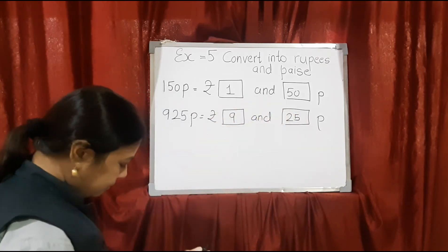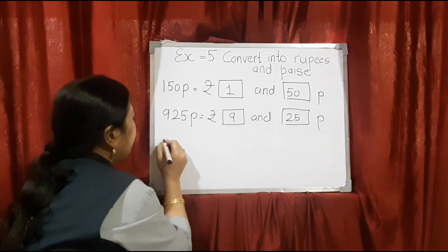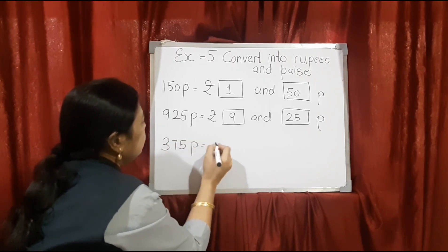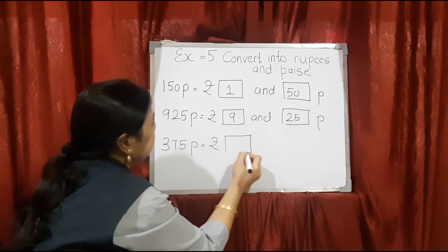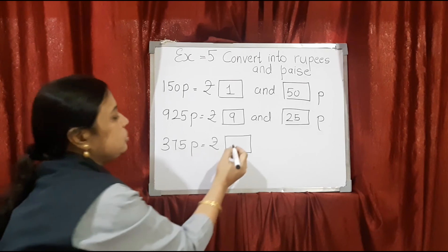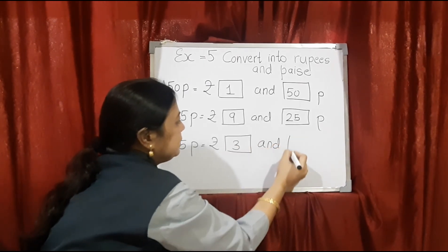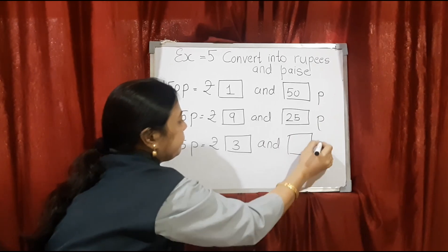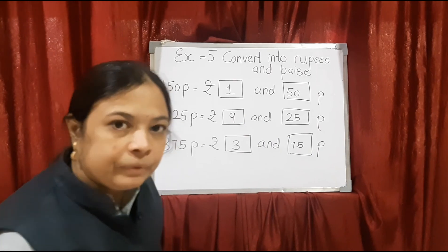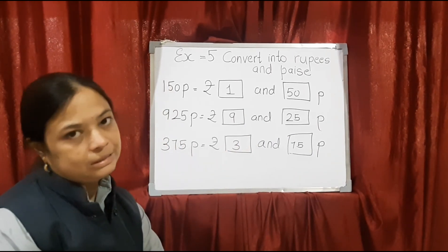One more example: 375 paise. The last 2 digits are of paise. So 3 is rupee, and how many paise are there? 75. So here we write 3 rupees and 75 paise. This is how you will convert paise into rupees and paise.